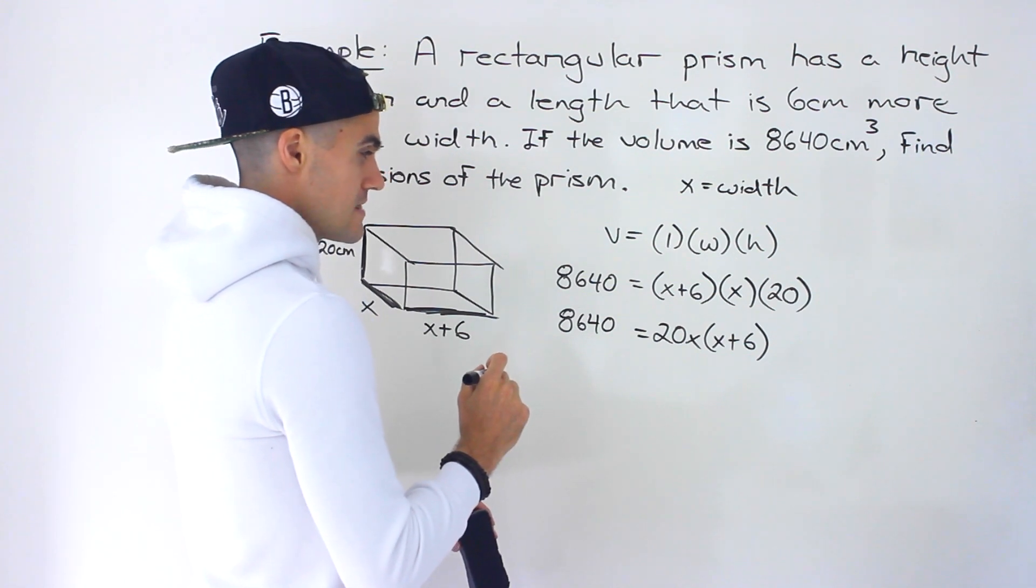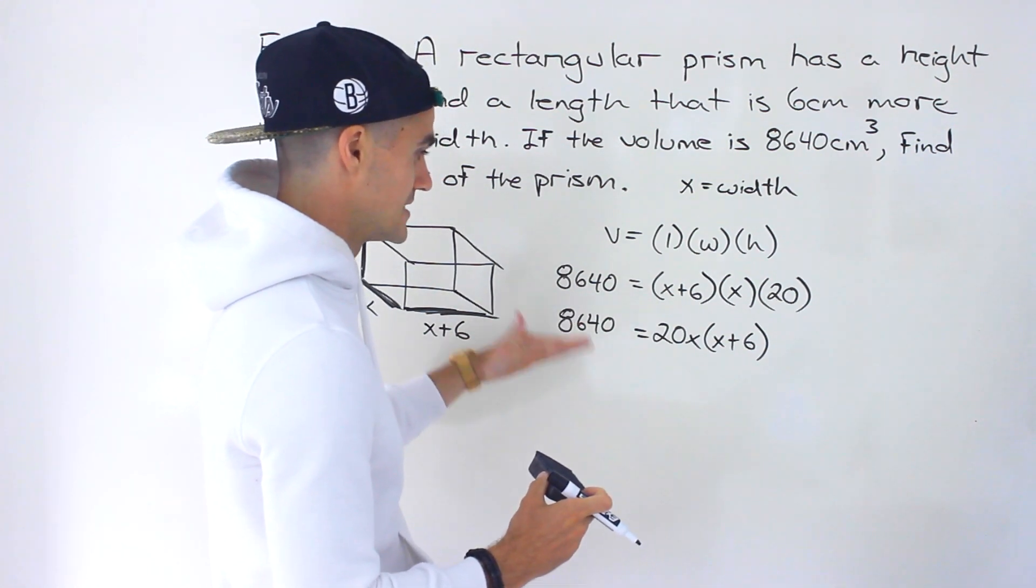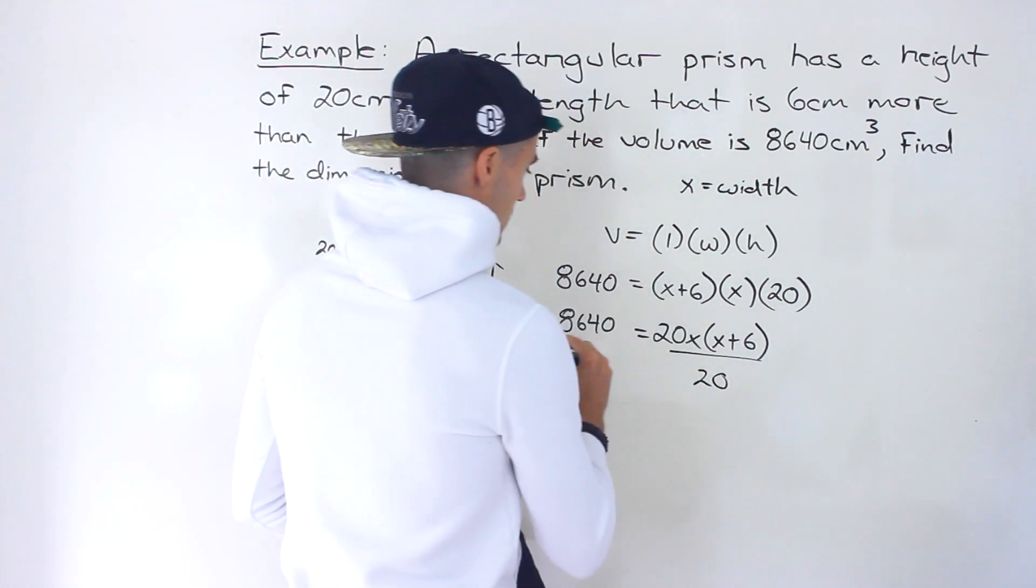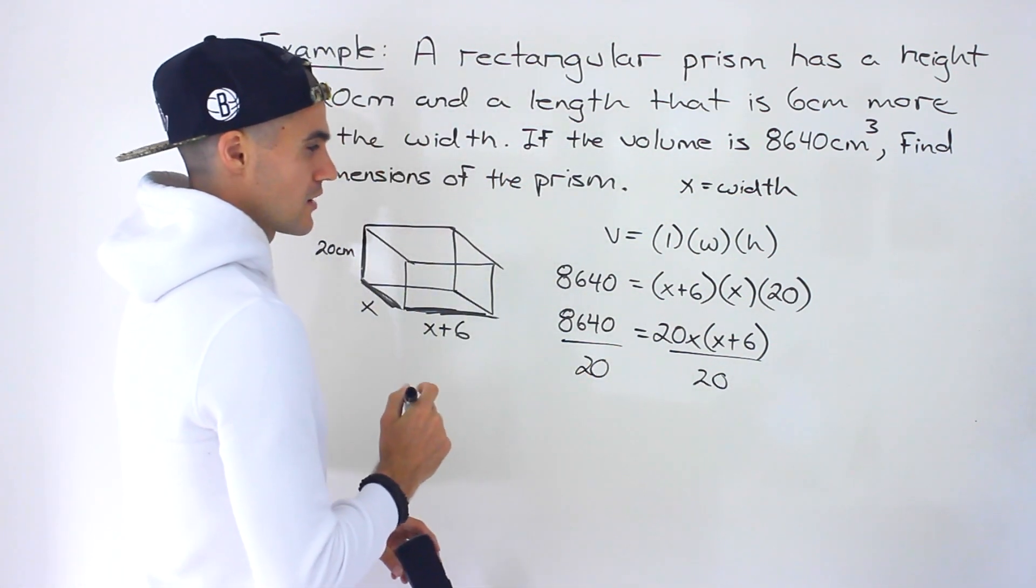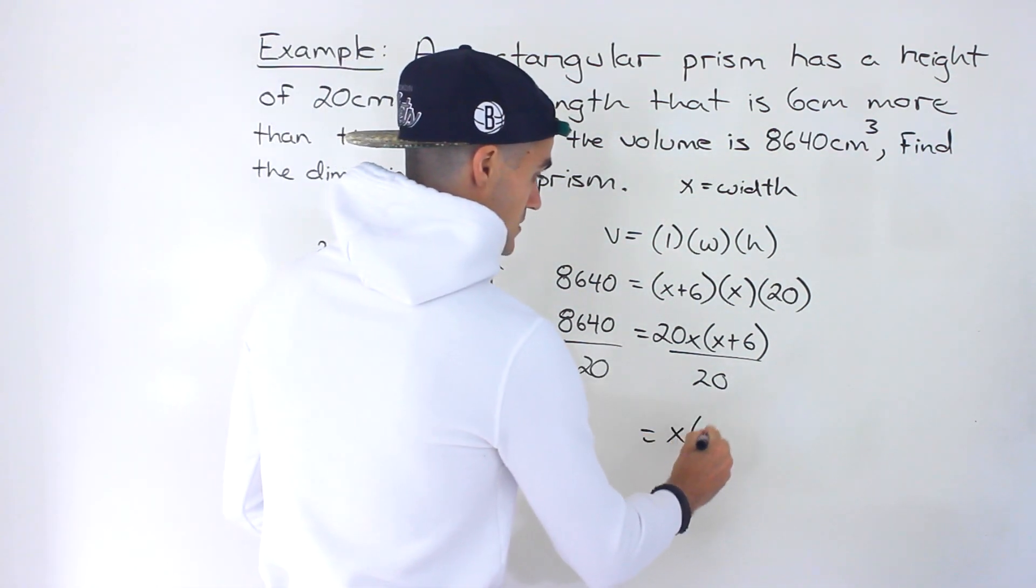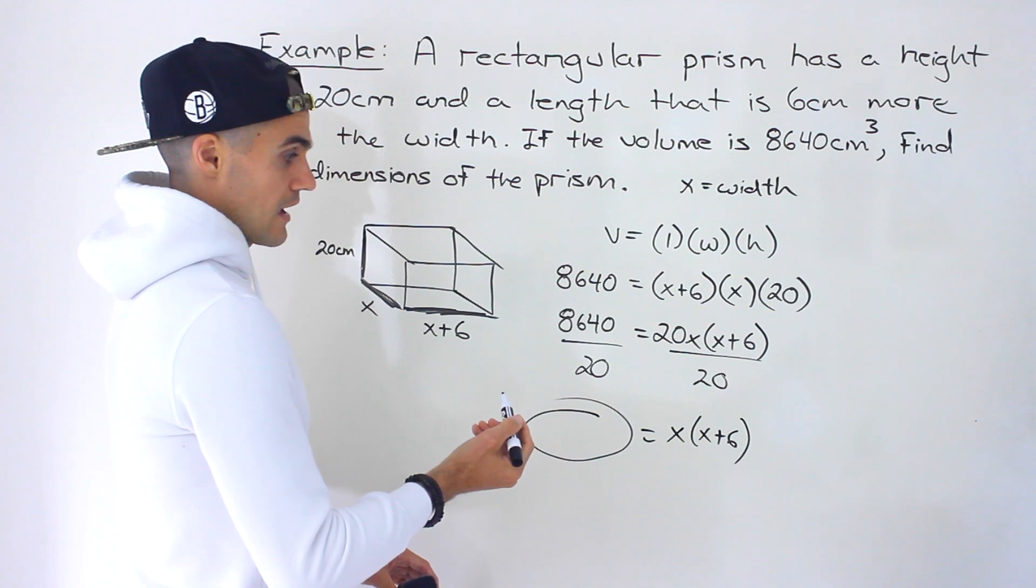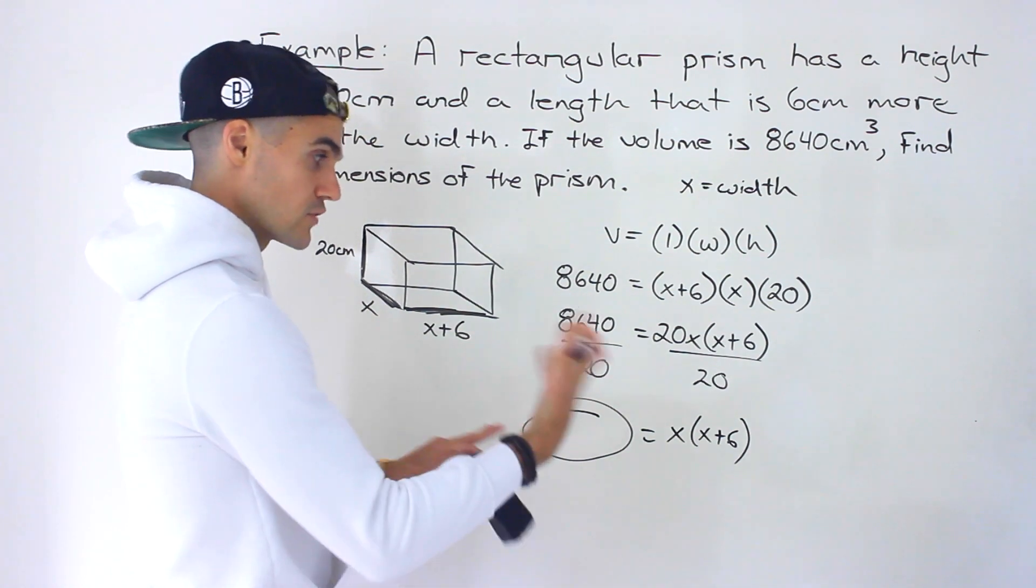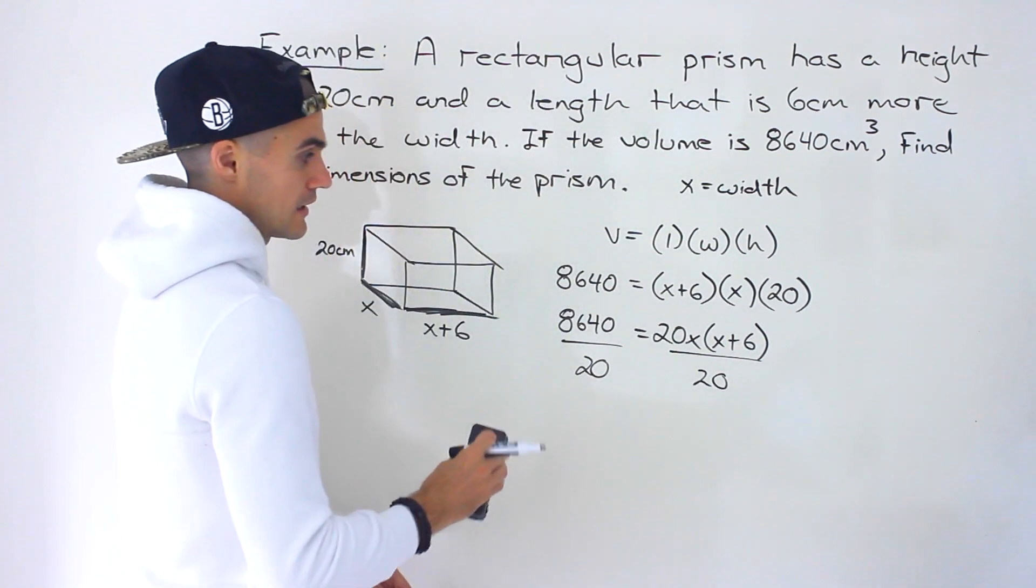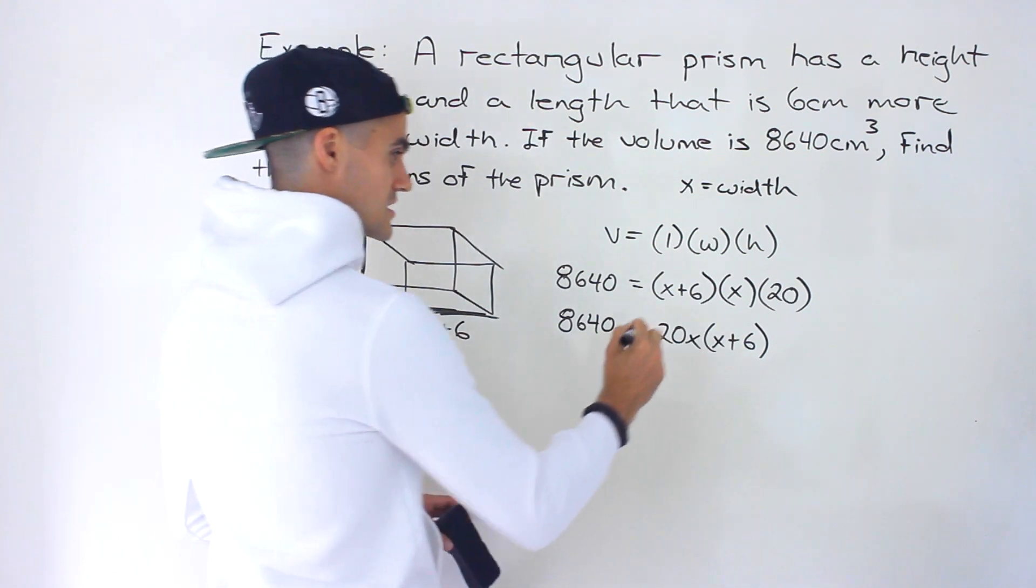Now if you want to simplify this you can actually divide both sides by 20. That's gonna bring down the size of the numbers you're dealing with. I'm not gonna go that route just because a lot of textbooks won't show that. But you can divide both sides by 20 and you're gonna get the same solutions that we're gonna get at the end. I'm gonna keep everything as it is.